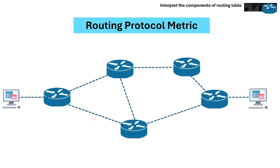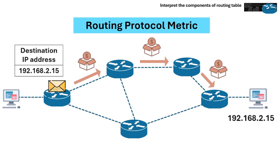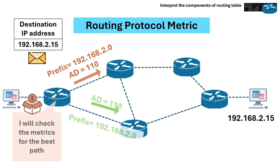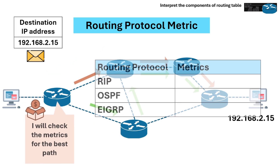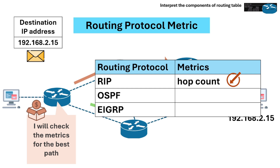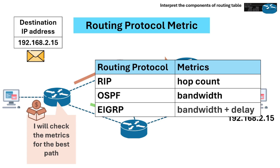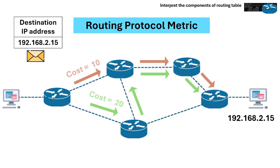The last priority is the routing protocol metric — the cost to reach the destination. Routers use metrics to determine the best path when administrative distance and prefix length are equal. The metric type depends on the protocol: RIP's metric is hop count, the lower the better. OSPF uses cost based on bandwidth, also lower is better. EIGRP uses a composite metric composed of bandwidth, delay, reliability, and load.